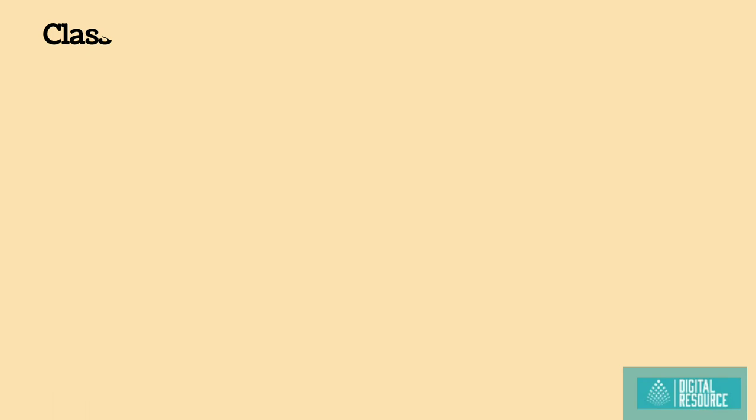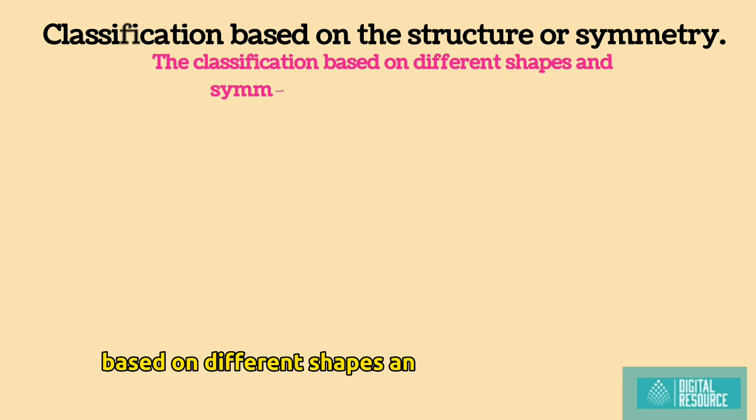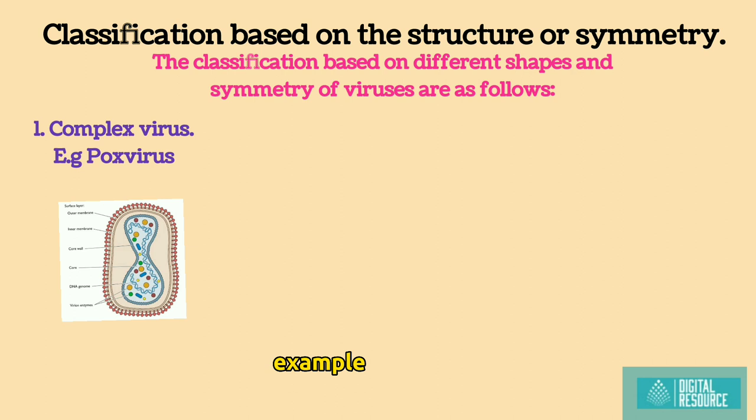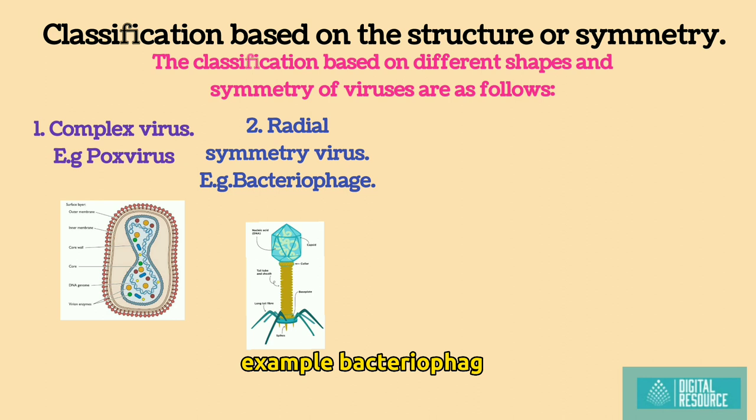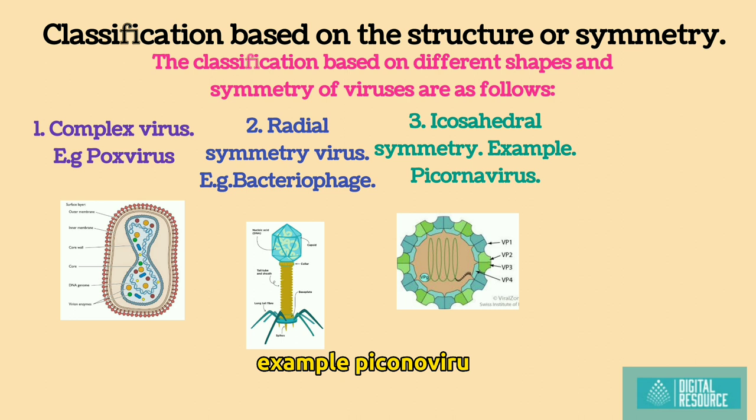Classification based on the structure or symmetry. The classification based on different shapes and symmetry of viruses are as follows: 1. Complex virus, example: Poxvirus. 2. Radial symmetry virus, example: Bacteriophage. 3. Cubical or icosahedral symmetry, example: Picornovirus. 4. Helical symmetry virus, example: Paramixovirus.